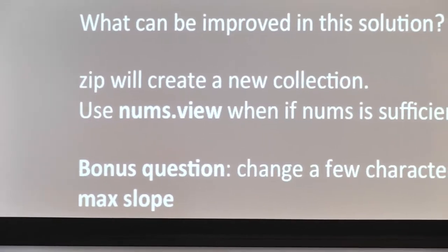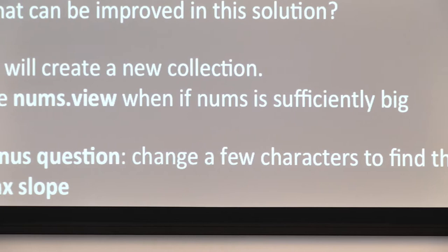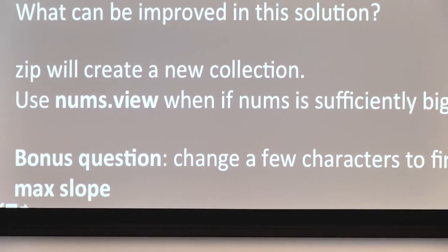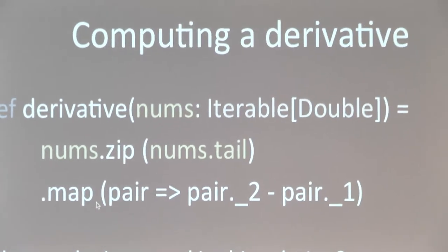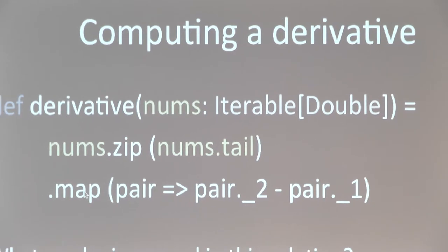Here's a bonus question: to find the pair with the maximum slope, we use maxBy. In fact, maxBy is going to return the pair that has the highest slope. So instead of map, we write maxBy, and it uses the provided function as the criteria for finding the max element.